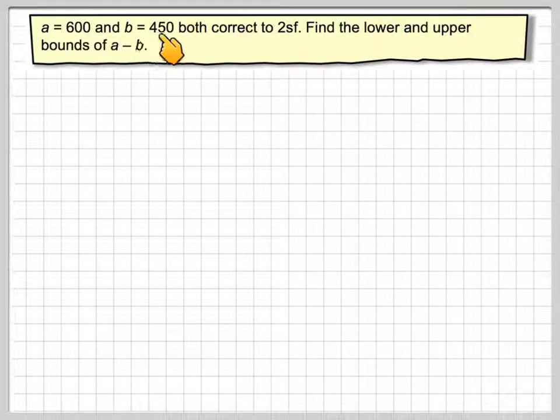If A is 600 and B is 450, both correct to two significant figures, find the lower and upper bounds of A minus B.